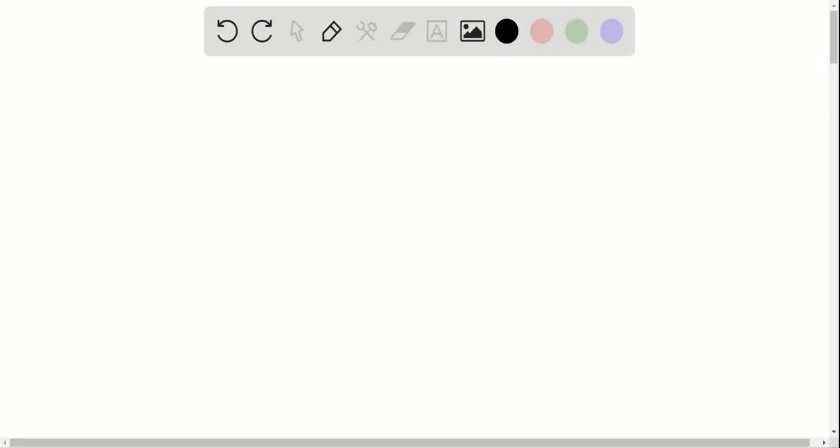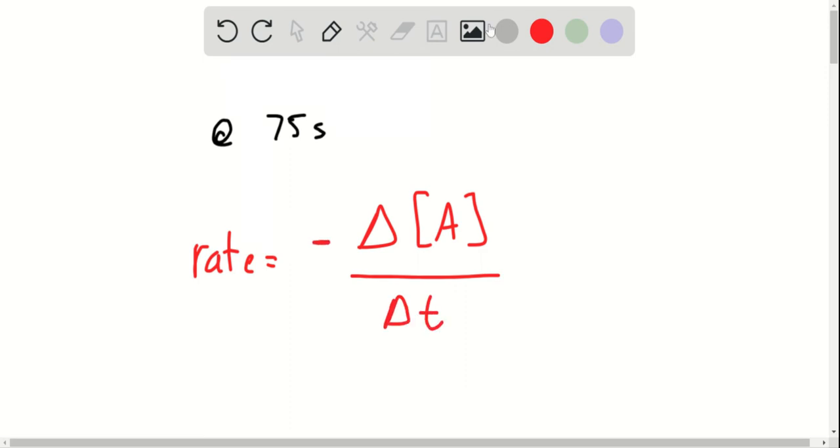So in order to approximate the rate at 75 seconds, remember the rate is going to be equal to the change in the concentration of A over the change in time. Technically there should be a negative sign in front here because A is a reactant and rate has to be positive.